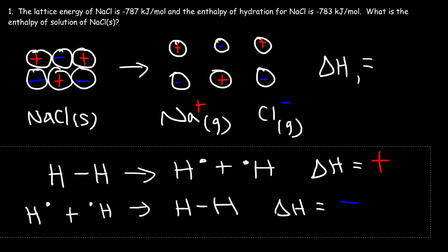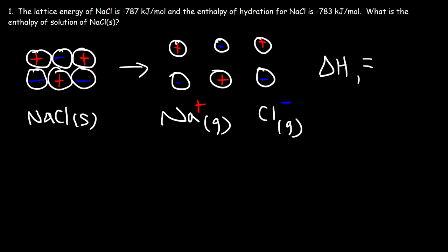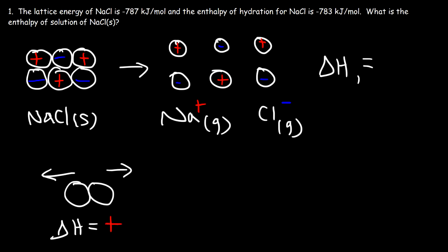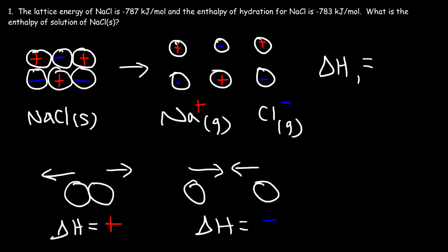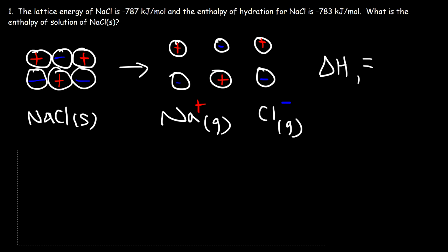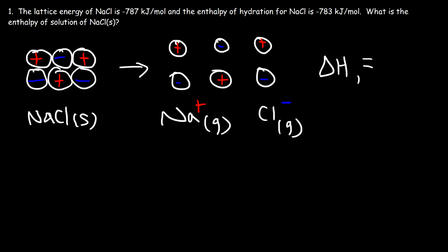To summarize: if you have two atoms that are close together, it takes energy to pull them apart — the separation of atoms is an endothermic process because you're breaking the bond. And when you have two atoms that are far apart and you bring them together, the enthalpy change is negative because they form a bond. So separating any particle is an endothermic process — you're breaking the ionic bonds that hold them together.